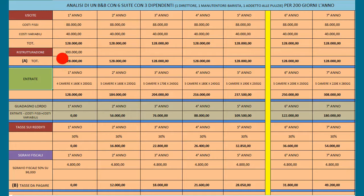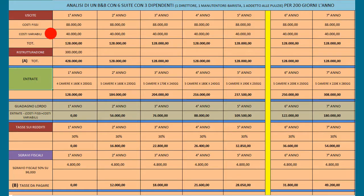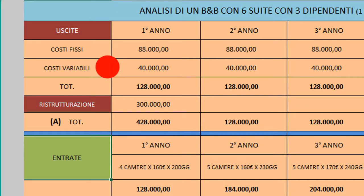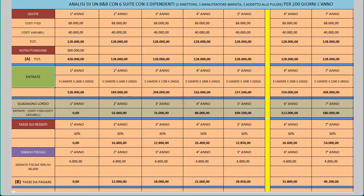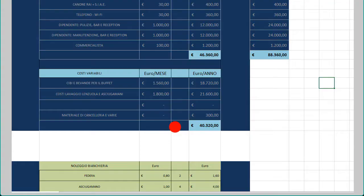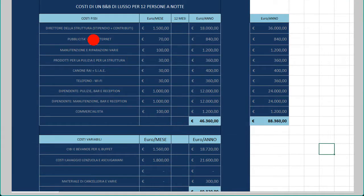Per capire questa differenza: i costi fissi sono quelli che, anche se la struttura è vuota e non abbiamo nemmeno un cliente, dovremo comunque affrontare. I costi variabili invece derivano da spese diverse, come i costi della lavanderia, eccetera. In questa tabella si può vedere la differenza tra i due.